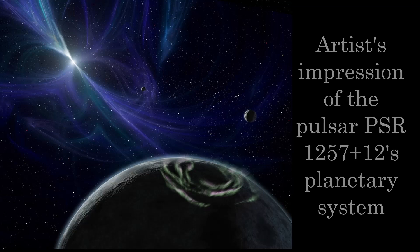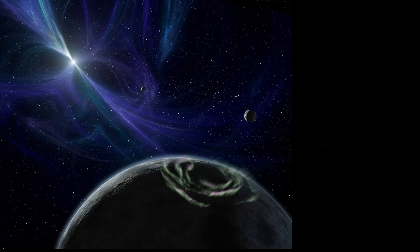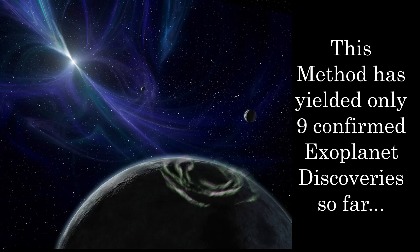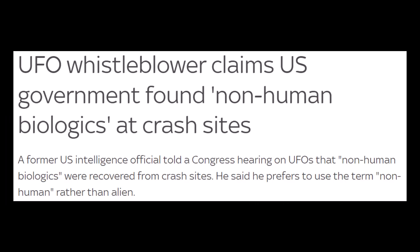Sadly for scientists, pulsars are extremely rare, and so far only nine exoplanets have been discovered using this method. Worse still for all you alien lovers, the unbelievable amounts of radiation given off by a pulsar would make it almost impossible for any life to survive on a planet orbiting one. But let's not get our hopes down, because luckily there's a different method.